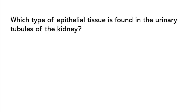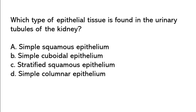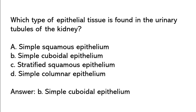Which type of epithelial tissue is found in the urinary tubules of the kidney? Simple squamous, simple cuboidal, stratified squamous, simple columnar. So the correct answer is option B: Simple cuboidal epithelium.